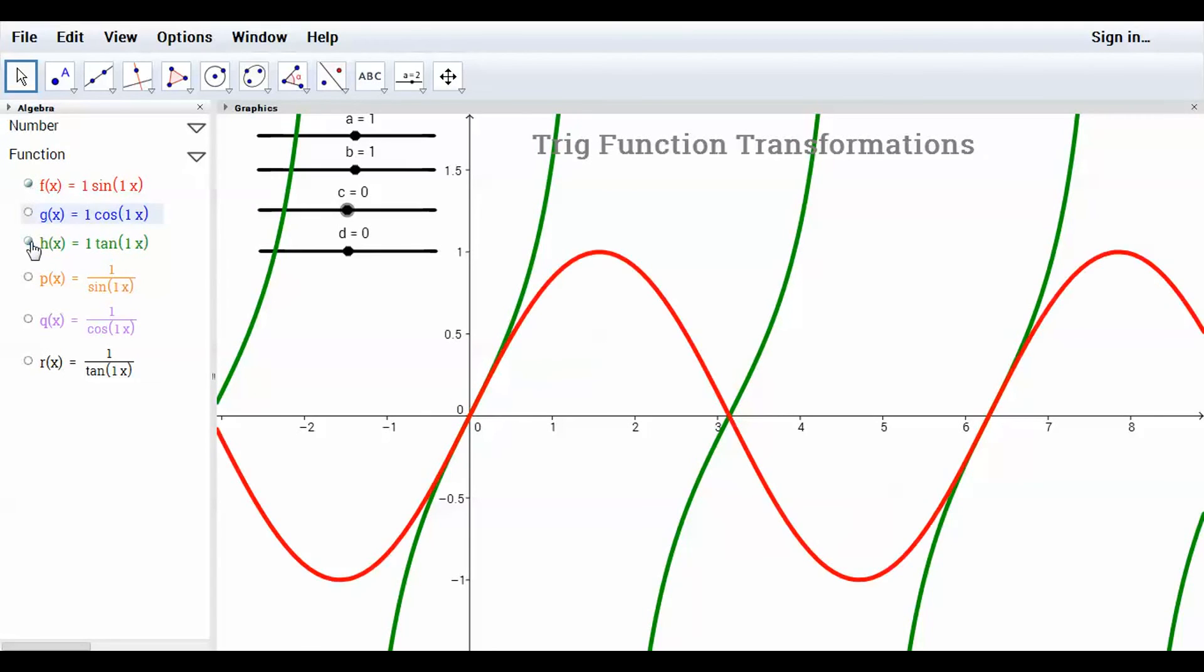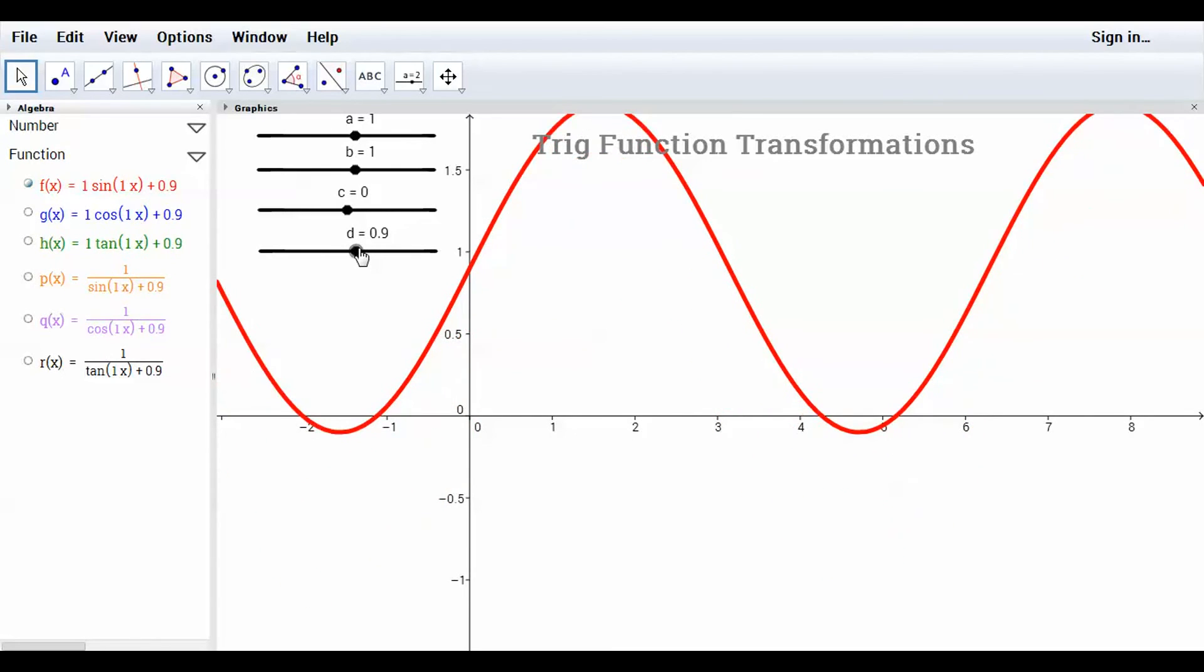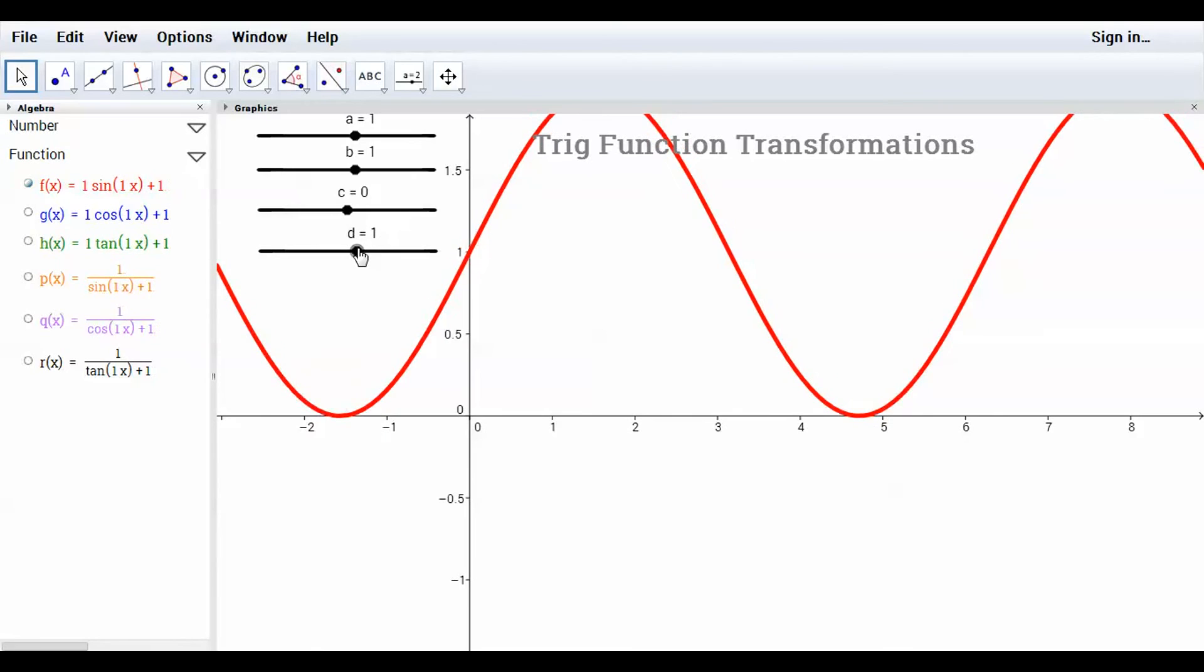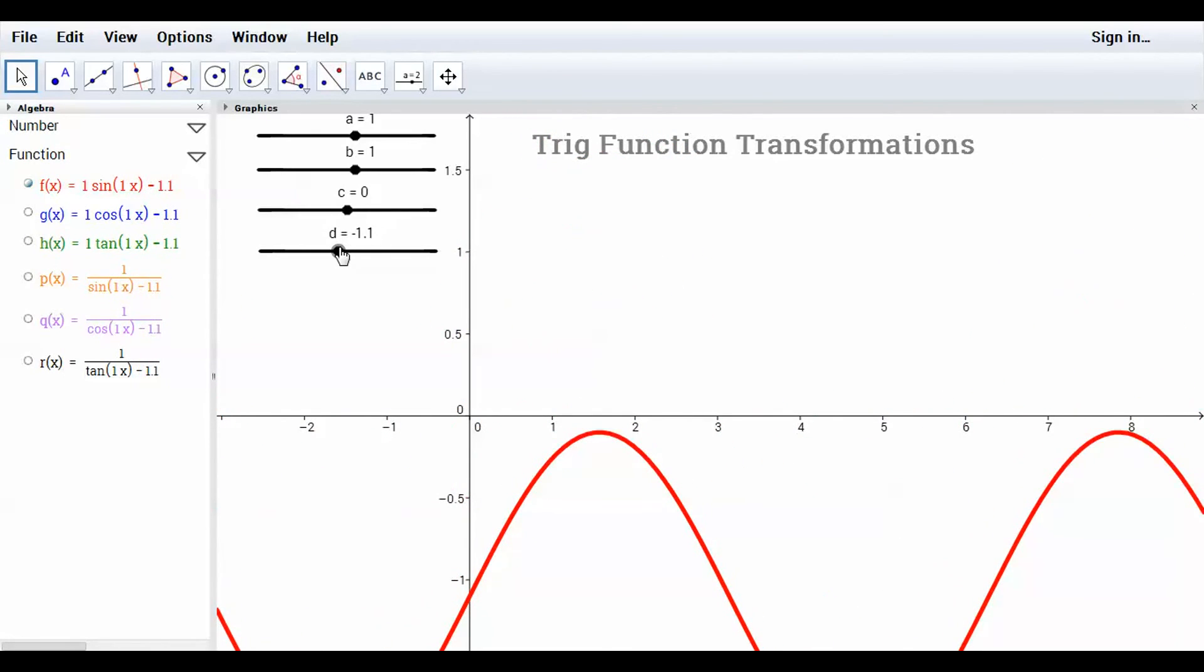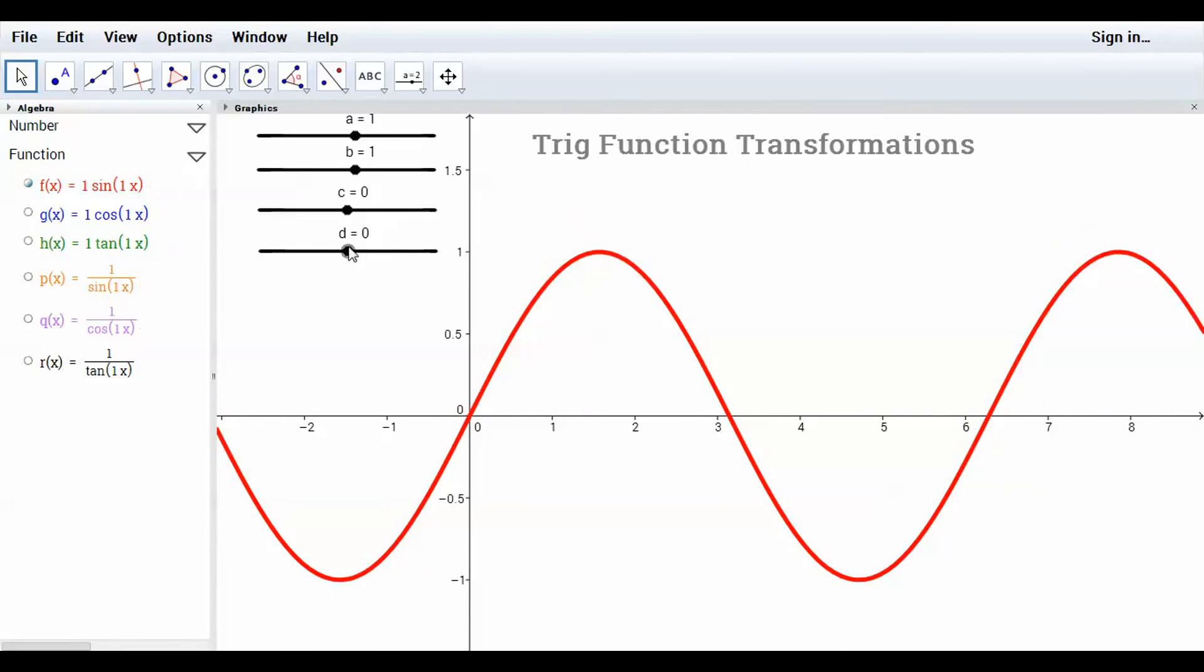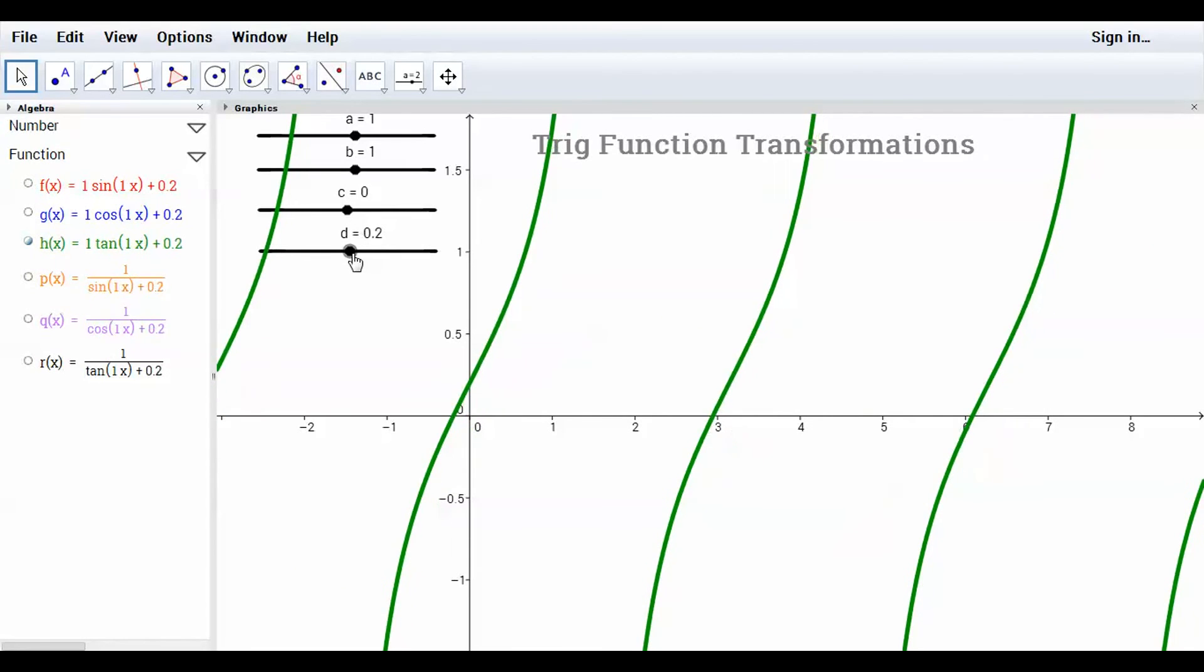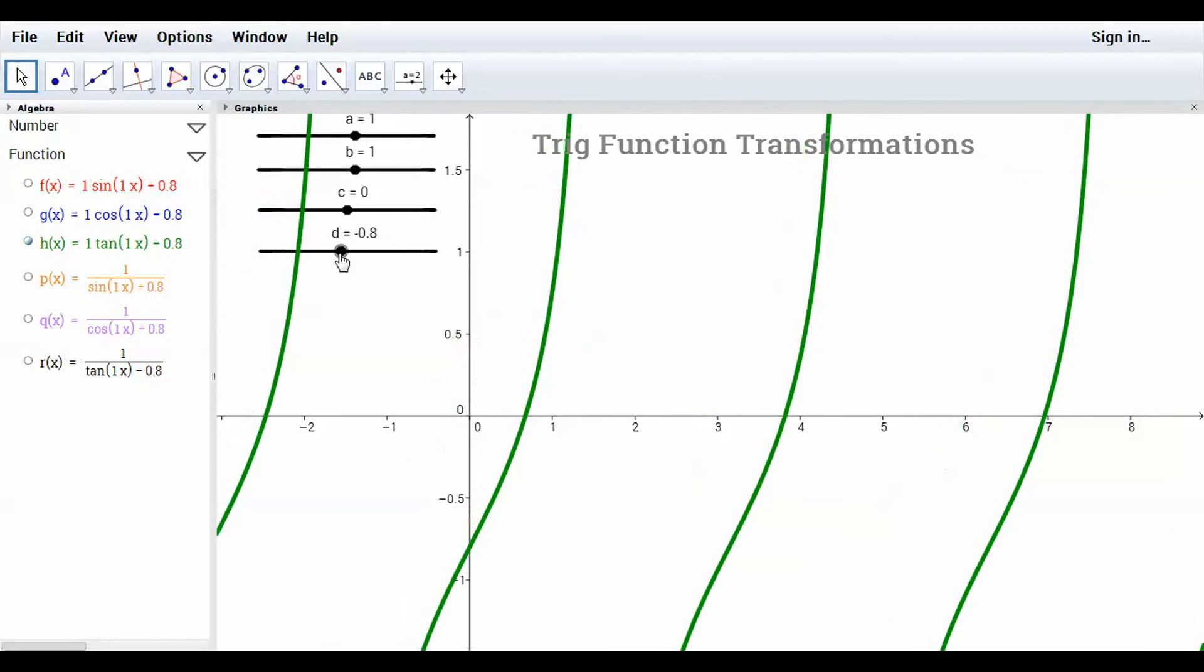Finally, let's take a look at what happens when we change the D value. This one is a vertical translation. So if I change it to positive 1, the graph moves up 1. Negative 1 moves down 1. The D value changes the vertical position of the graph. Cosine will be the same. Tangent's the same. Up positive D value, down negative D value.